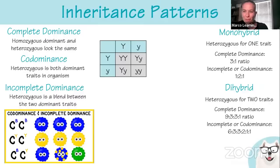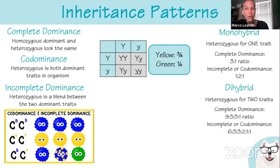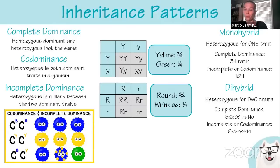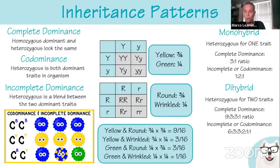To do dihybrid cross math, always do a monohybrid cross and multiply probabilities. In a monohybrid cross, three-fourths will be yellow and one-fourth green. For a second trait like round versus wrinkled, again three-fourths round and one-fourth wrinkled. To find yellow and round: 3/4 × 3/4 = 9/16. Yellow and wrinkled: 3/4 × 1/4 = 3/16. Green and round: 1/4 × 3/4 = 3/16. Green and wrinkled: 1/4 × 1/4 = 1/16.